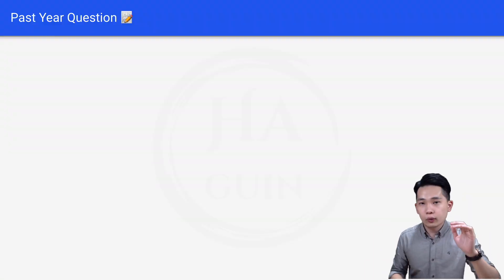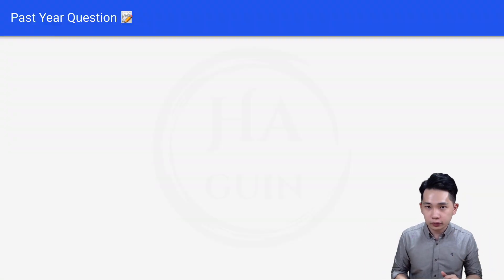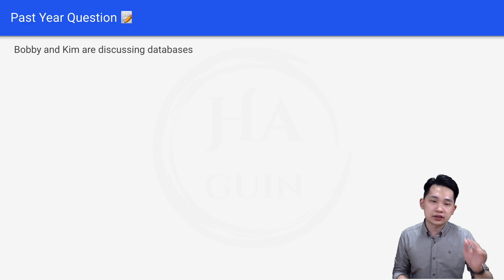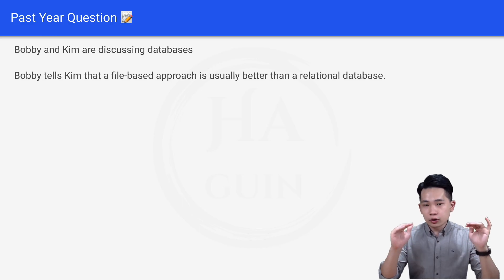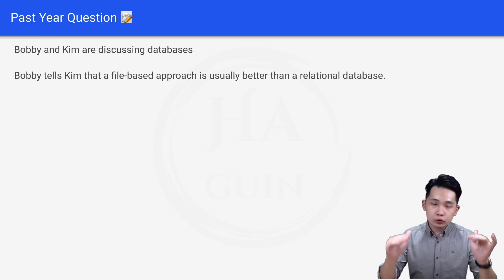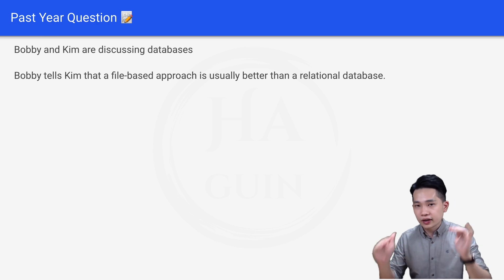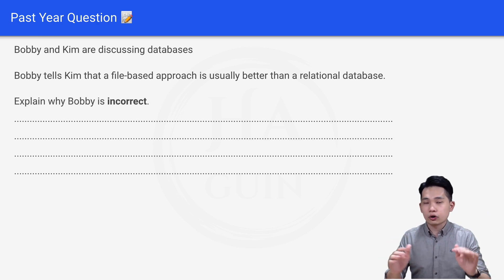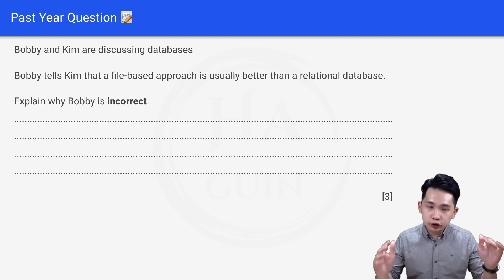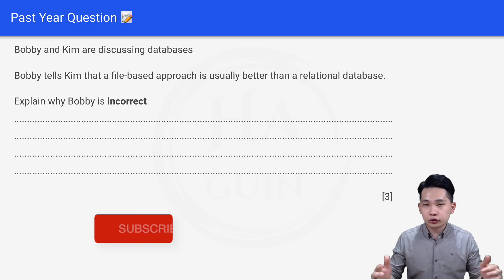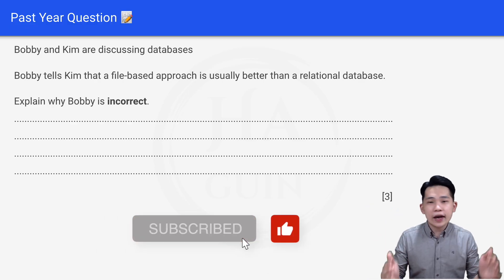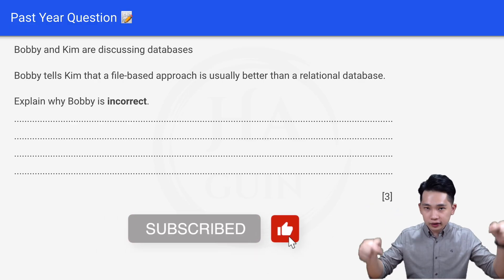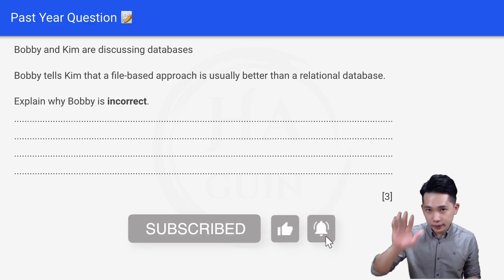Before we end, let's look at a practice question. Bobby and Kim are discussing databases. Bobby tells Kim that a file-based approach is usually better than a relational database. The question is: explain why Bobby is incorrect. This is a 3-mark question, so try to answer it based on what we learned in the video and comment your answer below. Thank you, and I'll see you again. Bye bye.